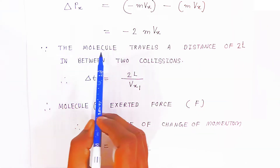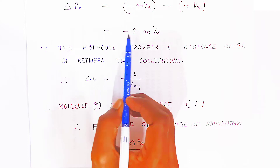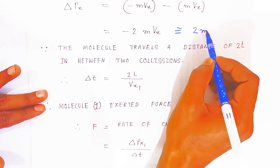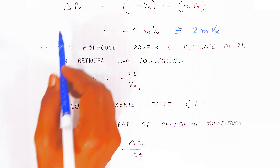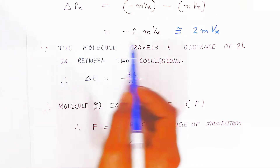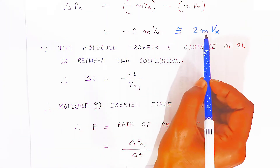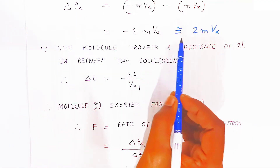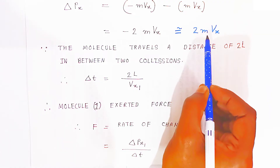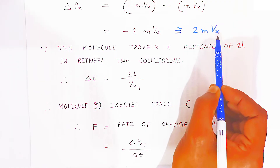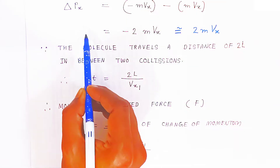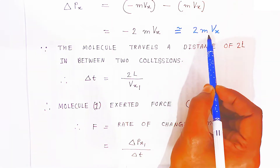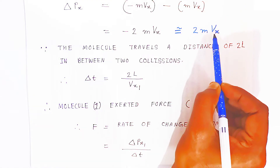Because we are taking the change in momentum as positive, it equals 2m·vx. So delta px — the change in momentum along the x-axis — equals twice of mass into velocity, that is 2m·vx. The change in momentum of a molecule equals twice the mass of the molecule times the velocity of the molecule along the x-axis.